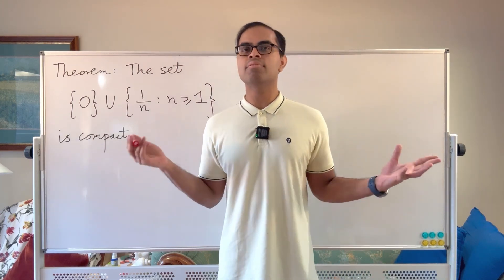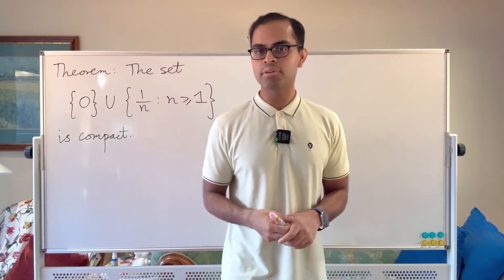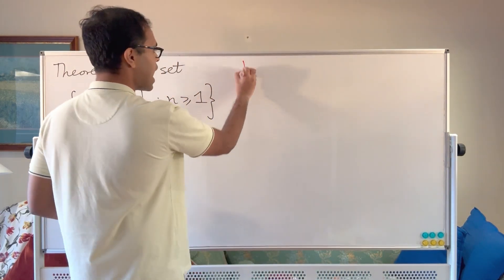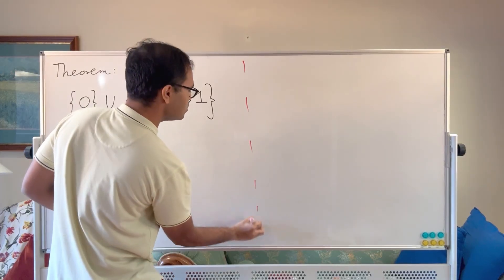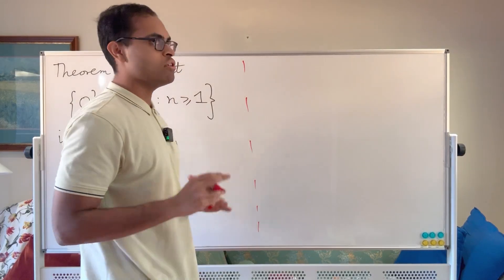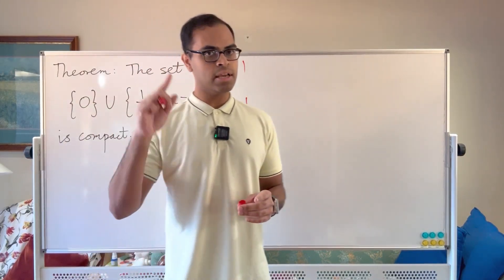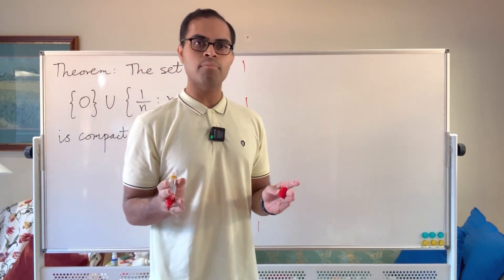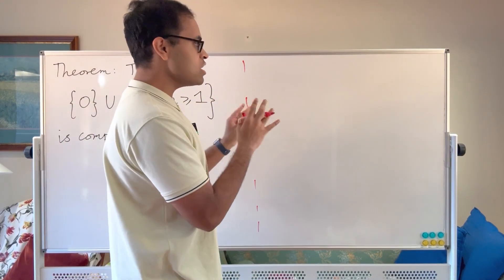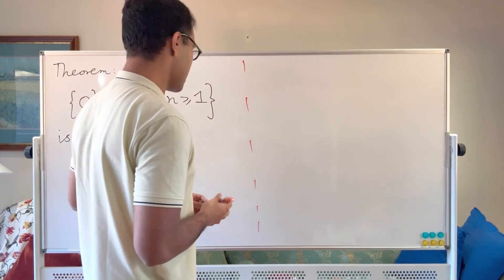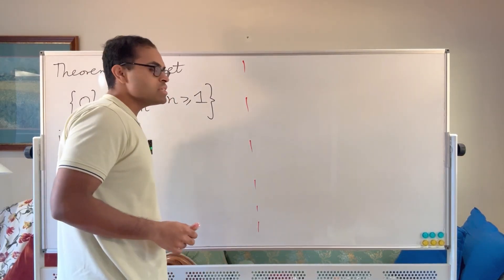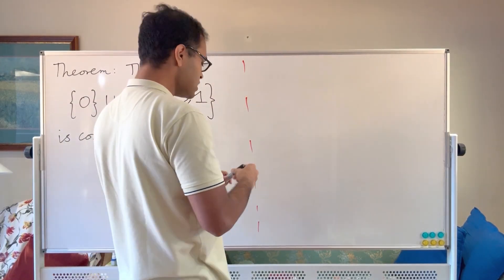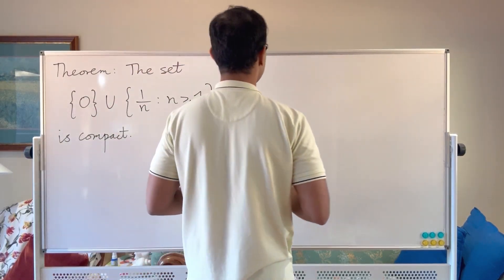So what does compactness even mean? Let's get into that first. You can skip this part if you already know it and want to get to the proof, but I'm going to give you a summary and some intuition for what it means. A set is compact — here's the definition — and we're looking at subsets of the real numbers.